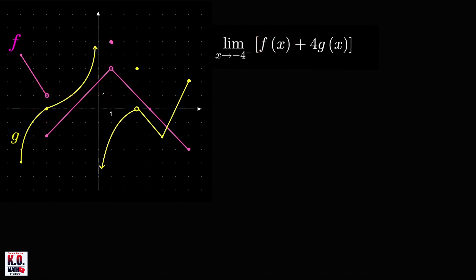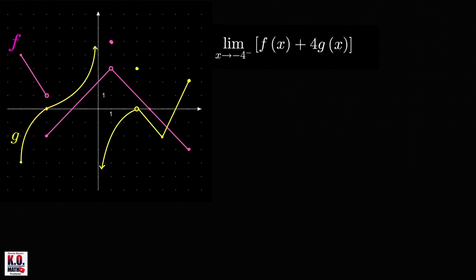And if we look at the function g, so again this is our negative 4. As x approaches negative 4 from the left, the points on the graph of g get closer and closer to this point where the y coordinate is equal to 0. So the function values of g(x) are approaching 0. And because these two limits exist, the limit of this sum is equal to 1 plus 4 times 0, which is equal to 1.